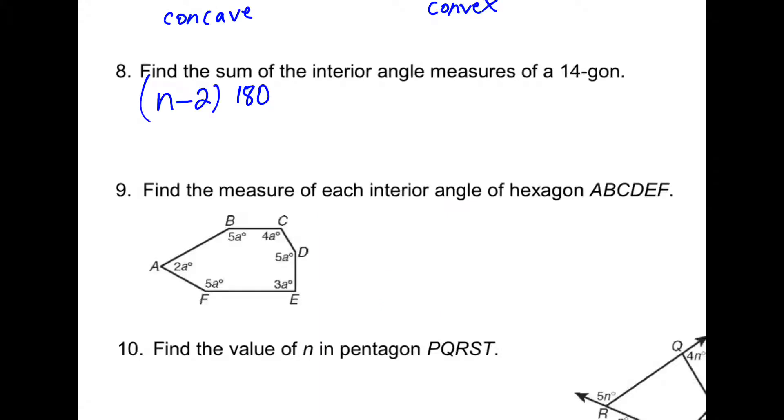For eight, the interior angle measures you find using the formula n minus 2 times 180. So if we plug in 14 and we multiply that by 180, we get 2160.